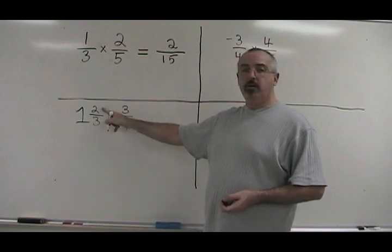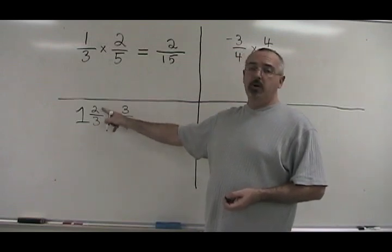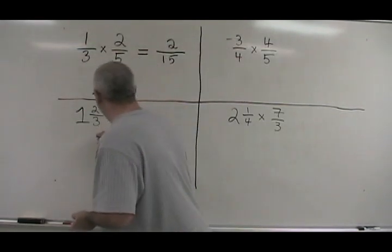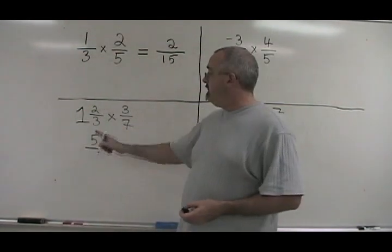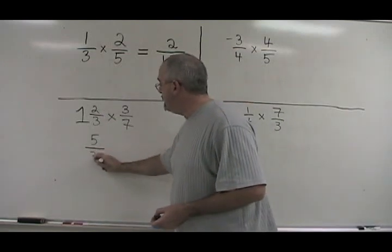the numerator 2. 3 plus 2 is 5. Our new numerator is 5. The denominator stays the same, so 3 goes down here.